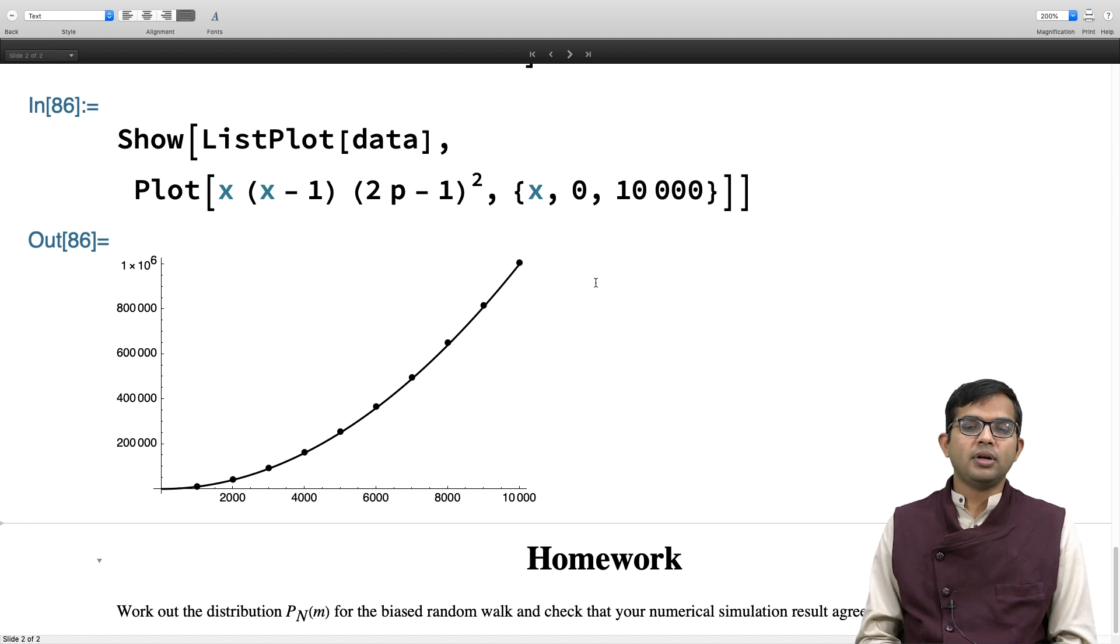What have we done in this module? Once again I emphasize, the key result to take home is that average of m squared goes as n, equals n in fact, for the discrete random walk. We've verified this numerically - the data sits right on top of the analytical expectation. We also did it for the biased random walk. As homework, you will verify that the probability distribution also works out both analytically and numerically. Thank you.